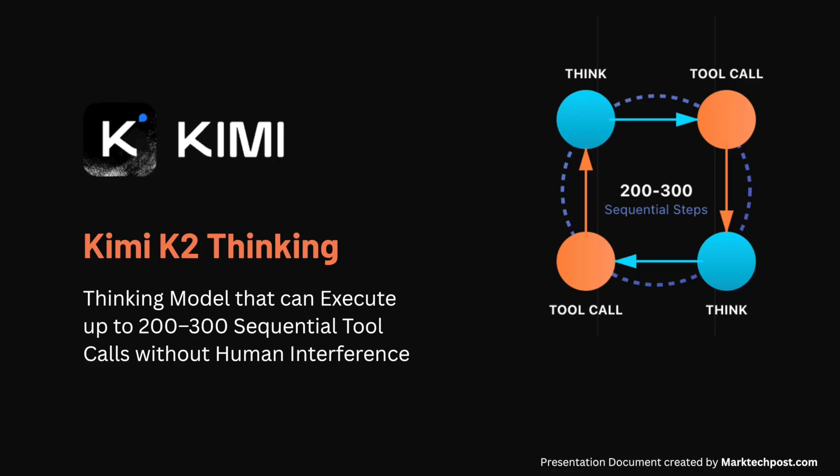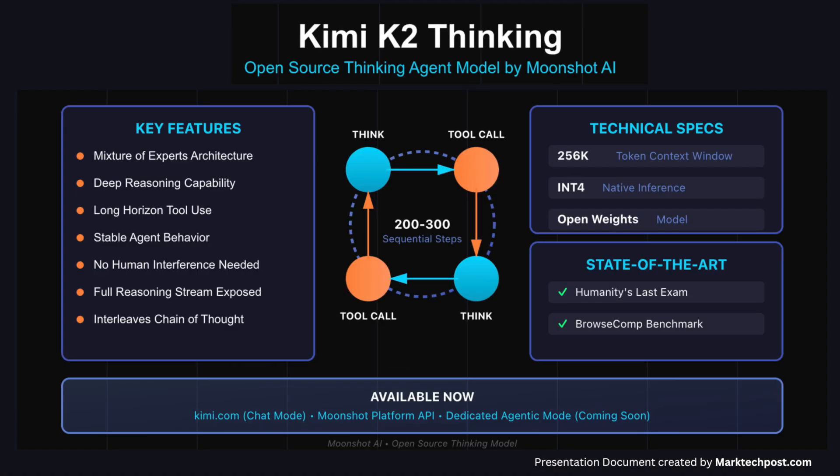How do we design AI systems that can plan, reason, and act over long sequences of decisions without constant human guidance? Moonshot AI has released Kimi K2 Thinking, an open source thinking agent model that exposes the full reasoning stream of the Kimi K2 mixture of experts architecture. It targets workloads that need deep reasoning, long horizon tool use, and stable agent behavior across many steps.